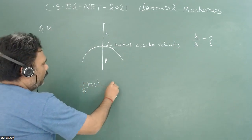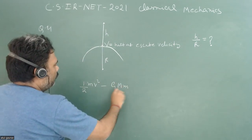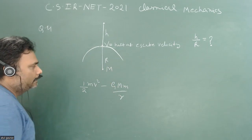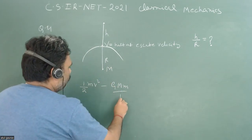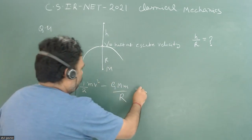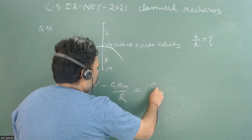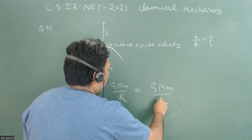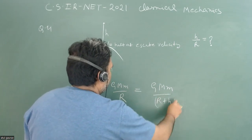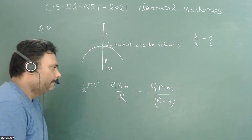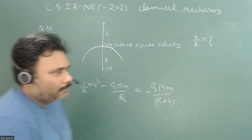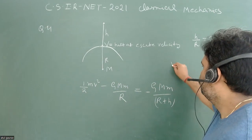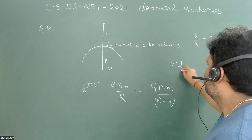We write: (1/2)mv² − GMm/R = −GMm/(R+h), where capital M is the mass of the Earth. It is also given that v is half of the escape velocity.